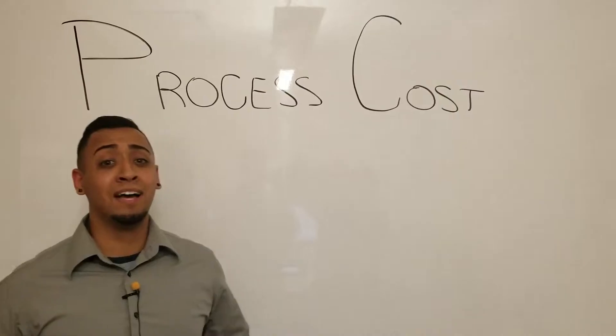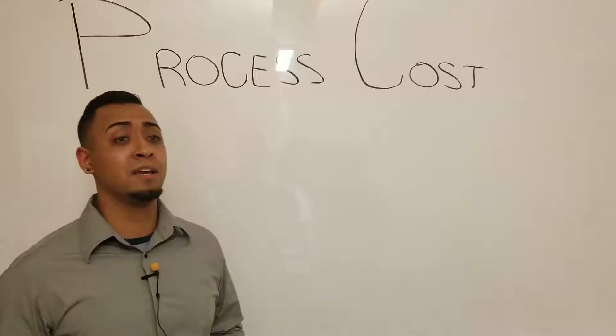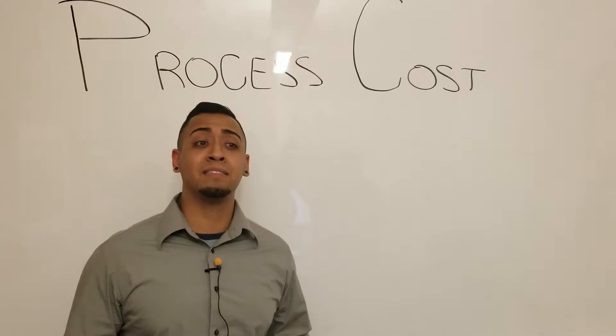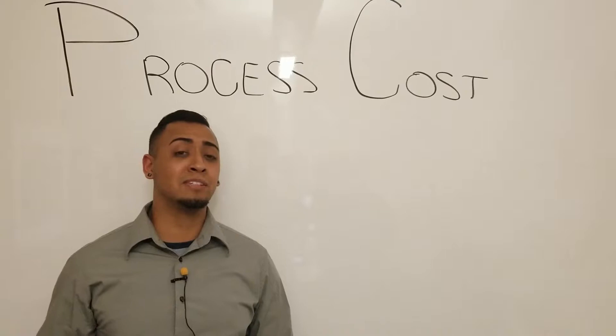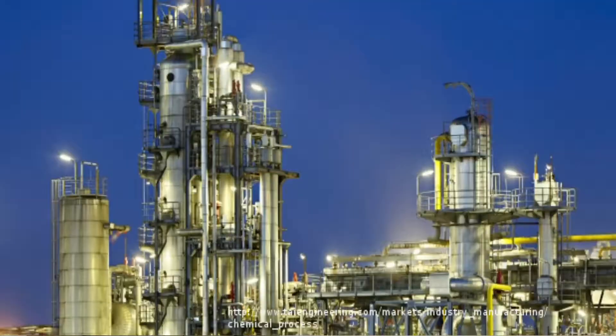Hi, my name is Isaiyawa and our group will be speaking to you about process costing, which is the method for collecting similar units and assigning the cost to the units produced. Usually this method is for similar products produced around the same price point. It accumulates costs over a fixed period and distributes to all the units produced. Usually companies that use this type of costing are food industries, oil refining, and chemical processing.